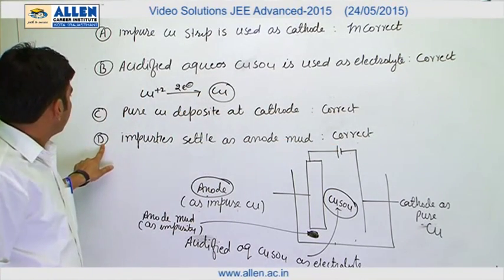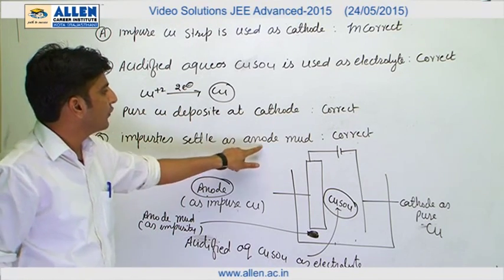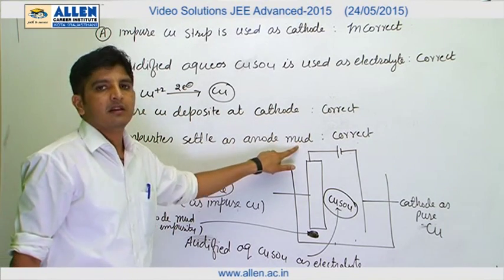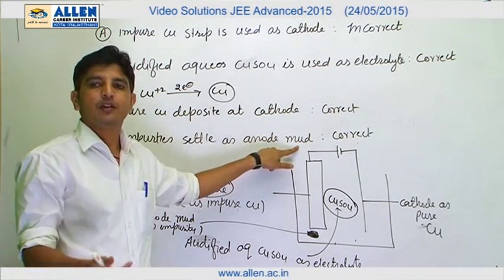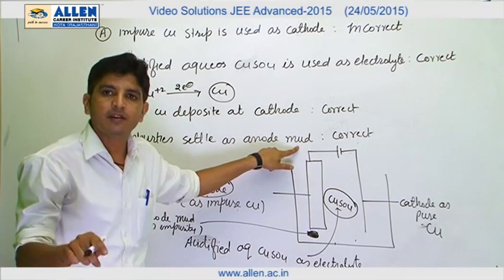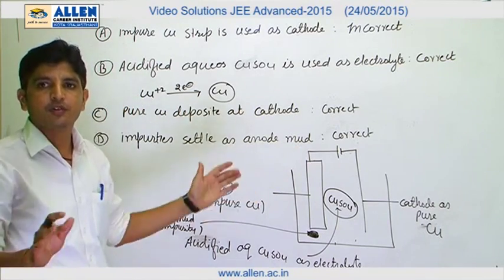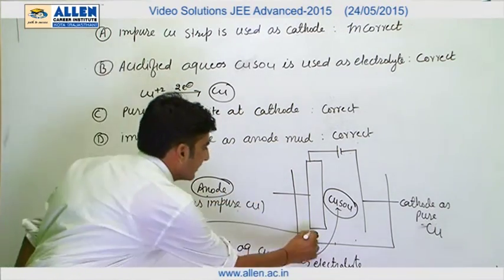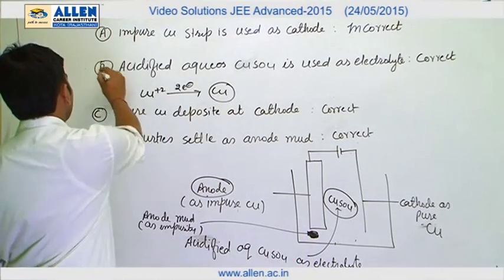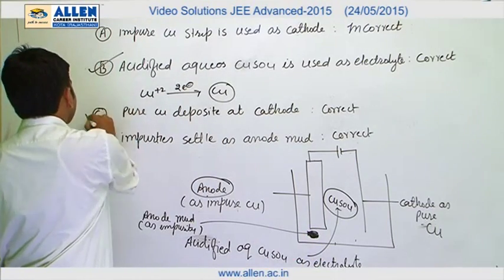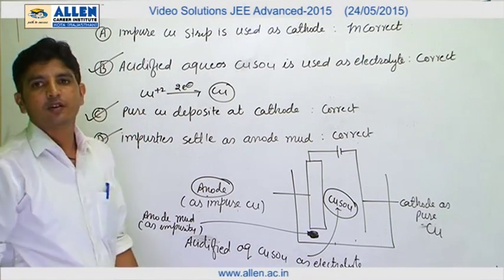Statement D: Impurities settle as anode mud. In electro refining, the impure metal is dissolved from the anode into the electrolyte solution. This statement is correct. Statements C and D are correct, while Statement A is incorrect.